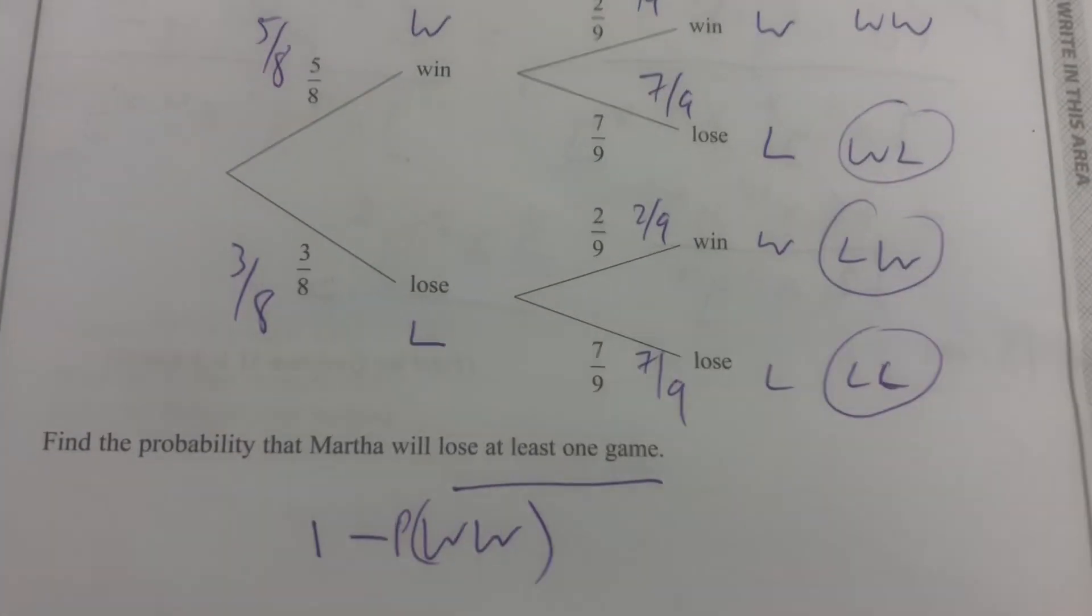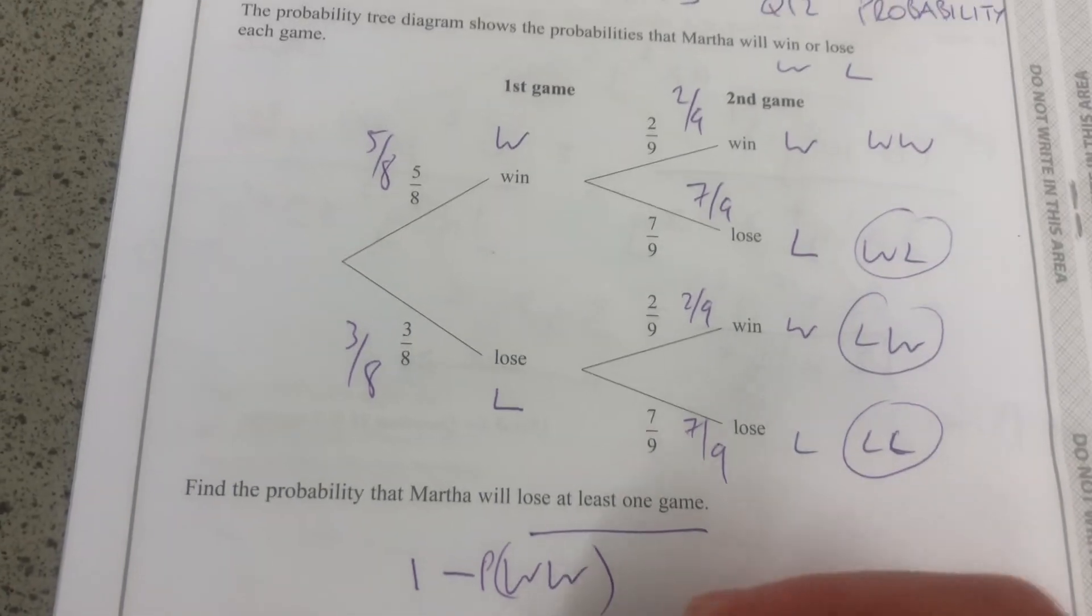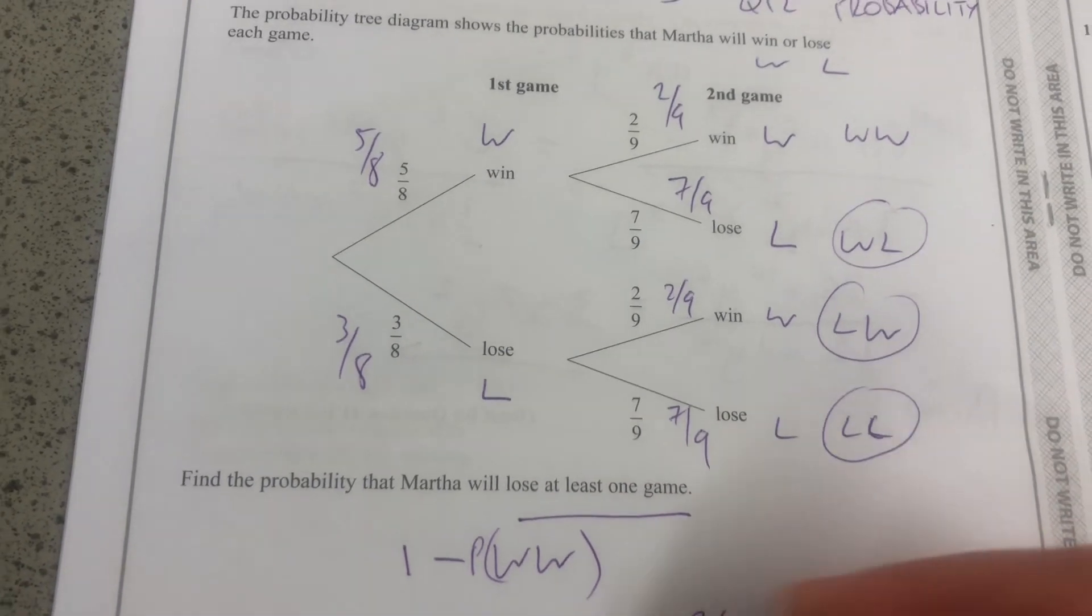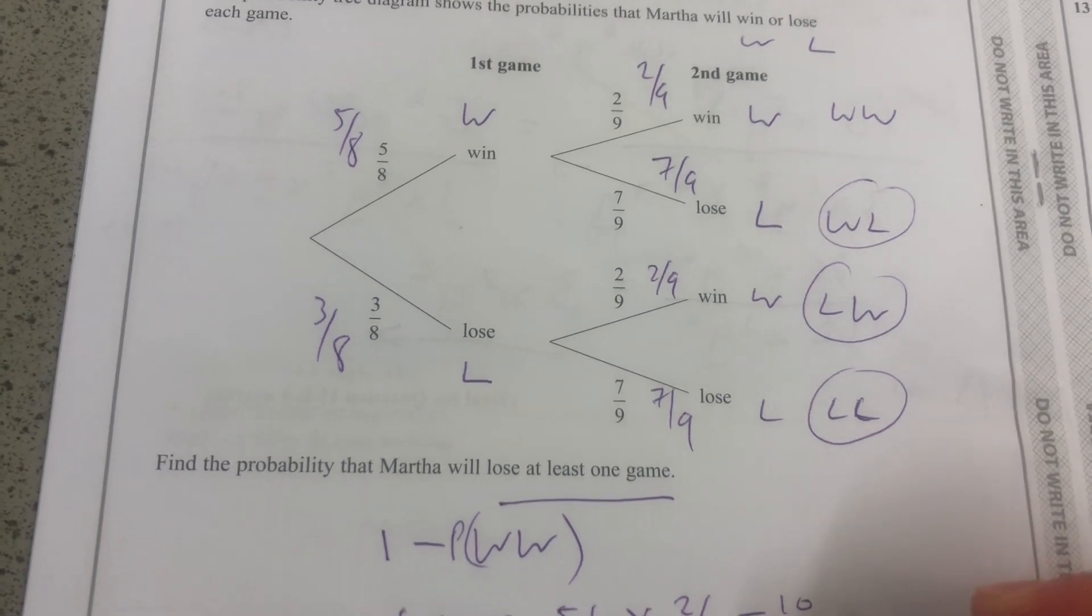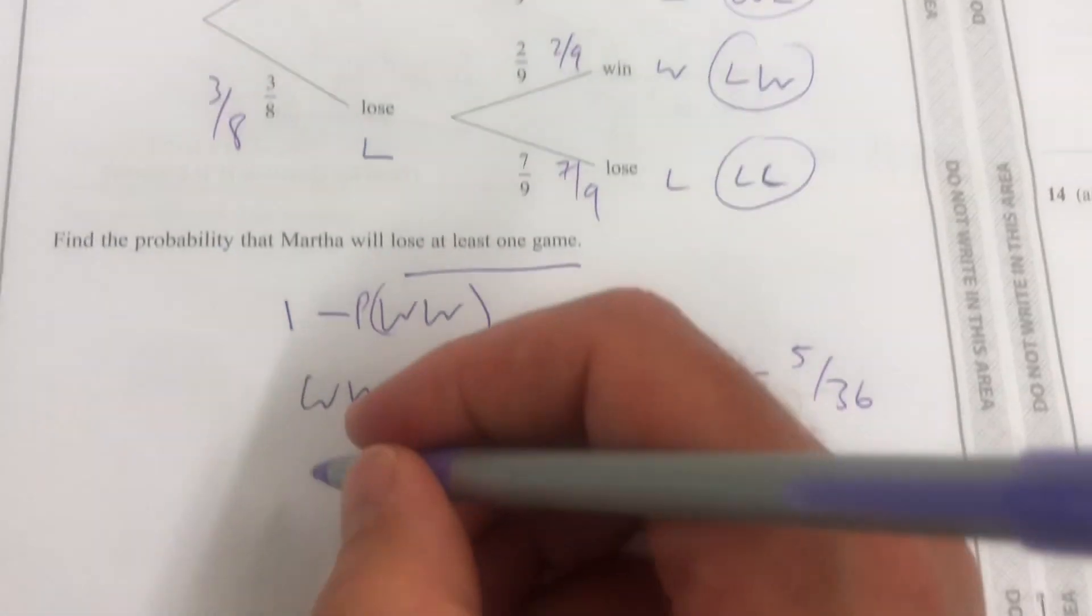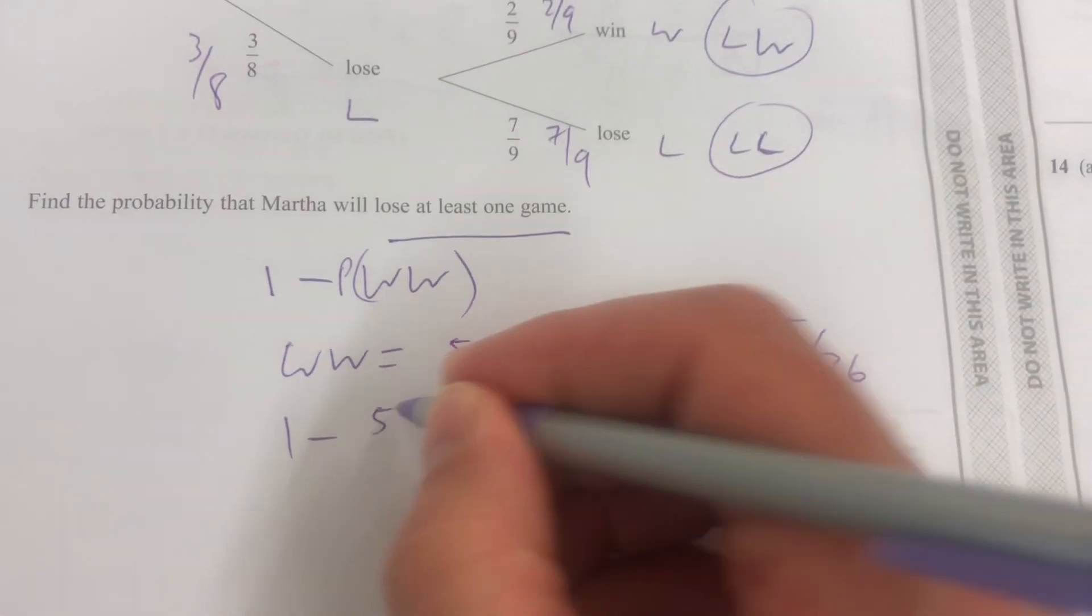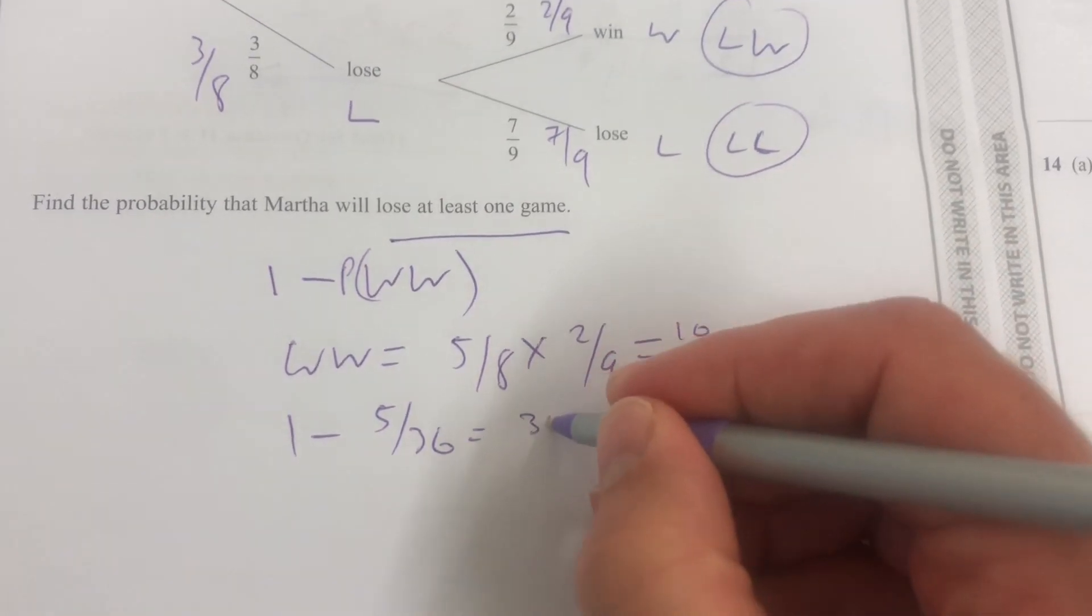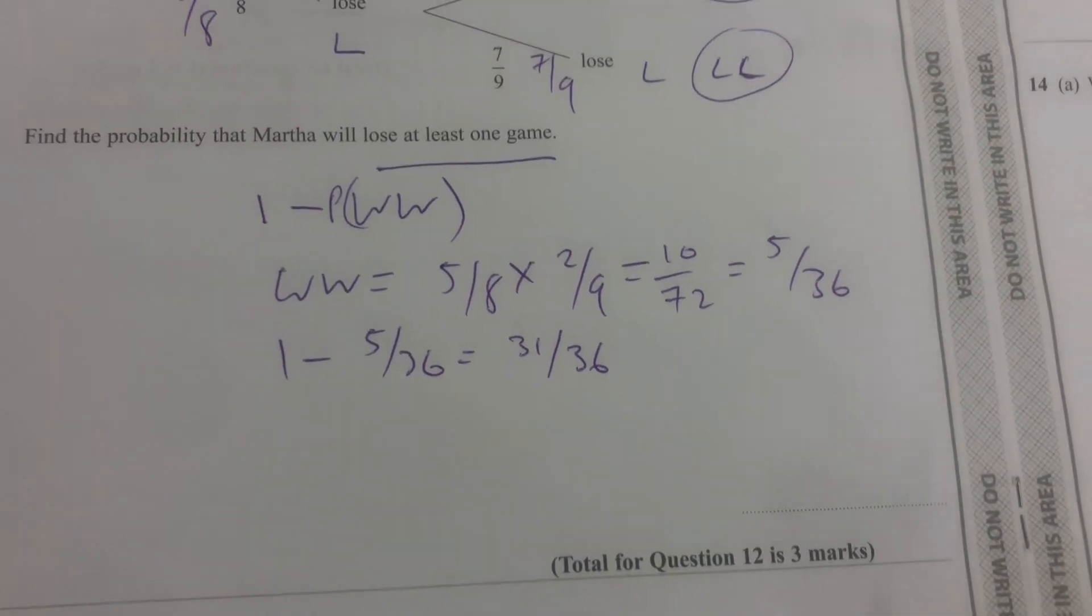Win-win is five-eighths times two-ninths. Multiplying across is 10 over 72. I can simplify that by dividing by two, five-thirty-sixths. Remember, they must all sum to one. So one takeaway five-thirty-sixths will leave me 31 over 36. So that is the answer.